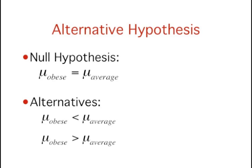If this null hypothesis is rejected, then there are two alternatives. One, the population mean of obese patients is less than the population mean of average weight patients. Or two, the population mean of obese patients is greater than the population mean of average weight patients.